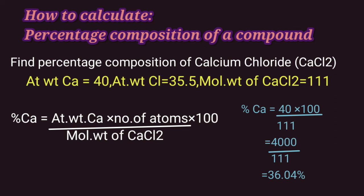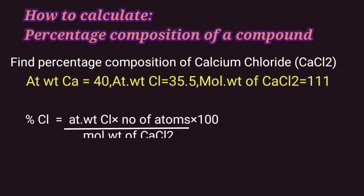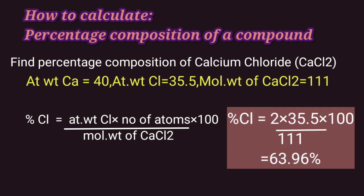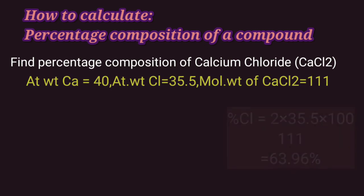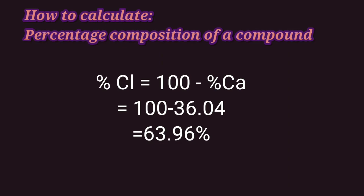On calculation we get the percentage of calcium as 36.04%. Now for percentage of chlorine in calcium chloride: since there are 2 atoms we multiply atomic weight of chlorine by 2 and divide by molecular weight of calcium chloride and multiply by 100. So that gives us 35.5 into 2 upon 111 into 100, which on calculation gives us 63.96%. We can also find percentage of chlorine by subtracting percentage of calcium from 100, that is 100 minus 36.04, which gives 63.96%.